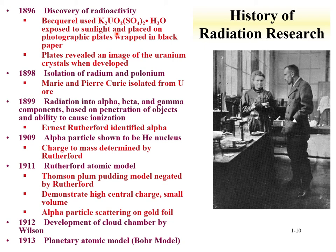Becquerel had potassium uranyl sulfate, exposed it to sunlight, wrapped it in photographic plates in black paper. When the plates were developed, they showed an image of the uranium crystals. Becquerel actually thought that the sunlight absorbed light and the uranium salt fluoresced and gave off that light — that was his proposal. This discovery of radioactivity was based on a wrong mechanism, but he still won a Nobel Prize for it.